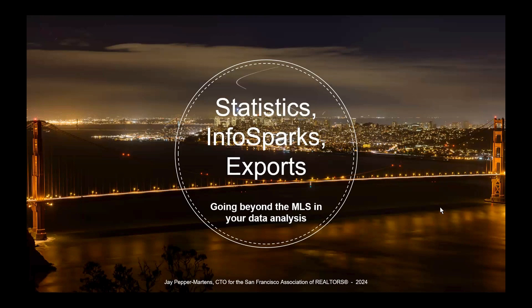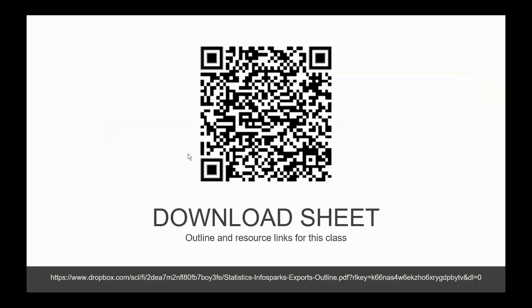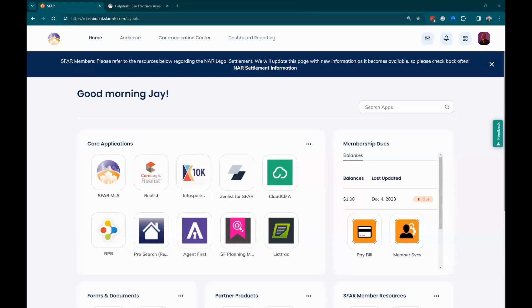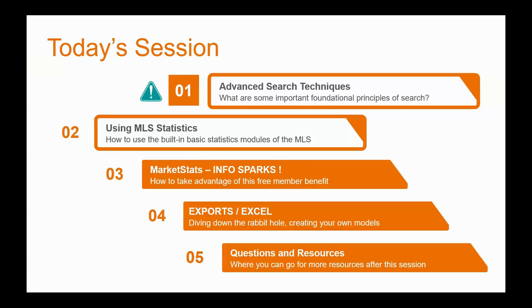Today we're going to cover a few things. First, you might want to scan that QR code, or I'll grab this text and put it in the chat. You're going to want this today — it's the outline for the materials I'm covering. We're going to cover some advanced search techniques, which is really the underlying foundational principle of statistical analysis: knowing what data you're including or excluding.